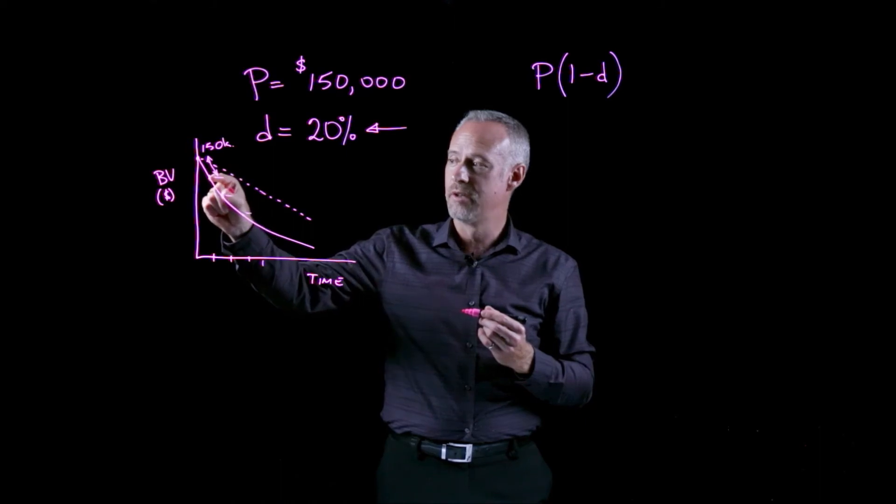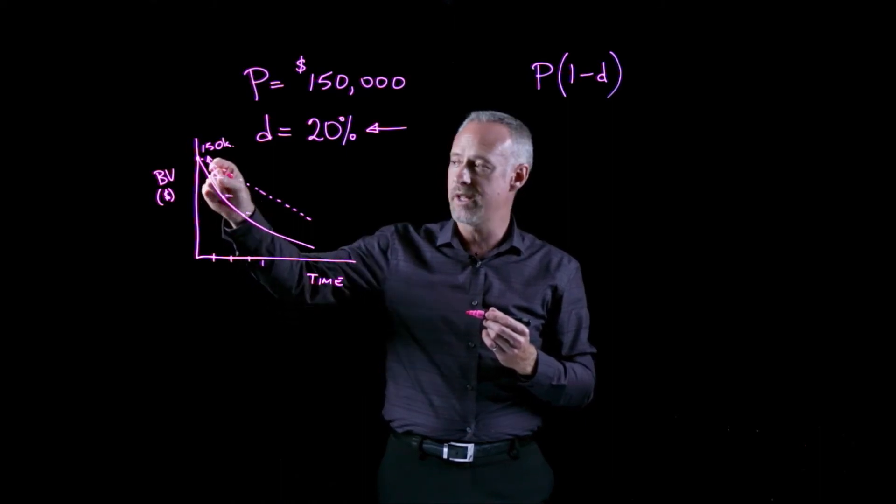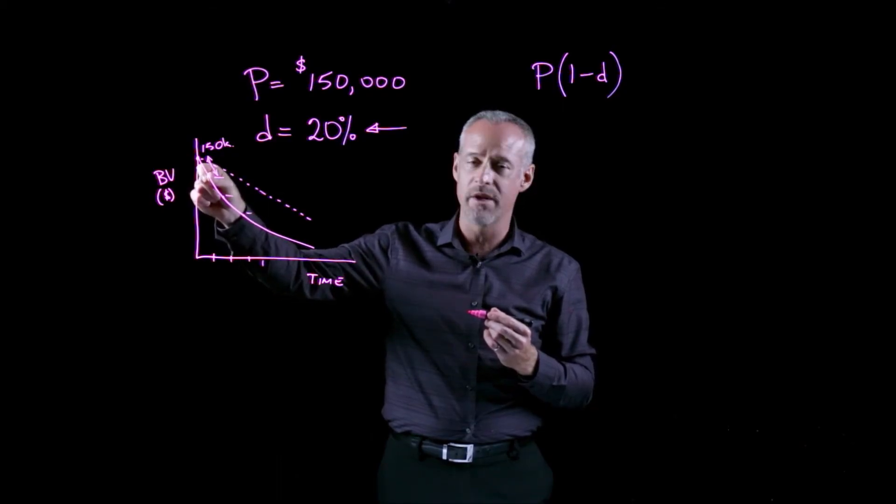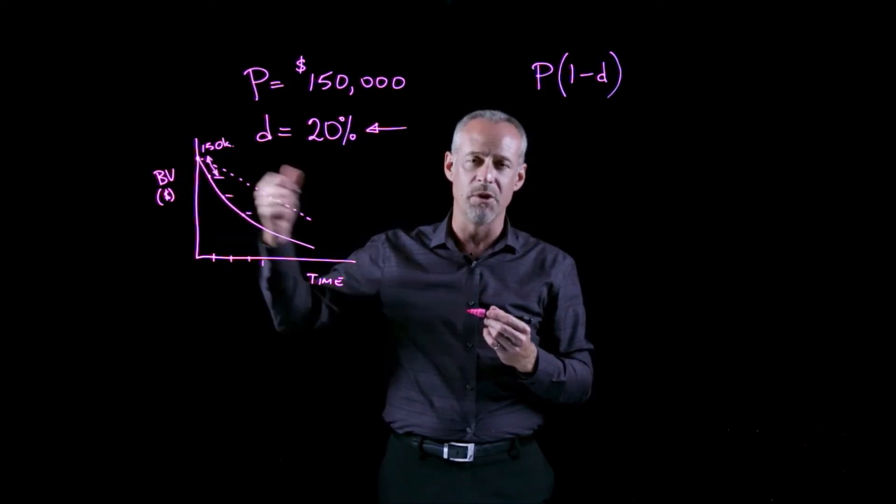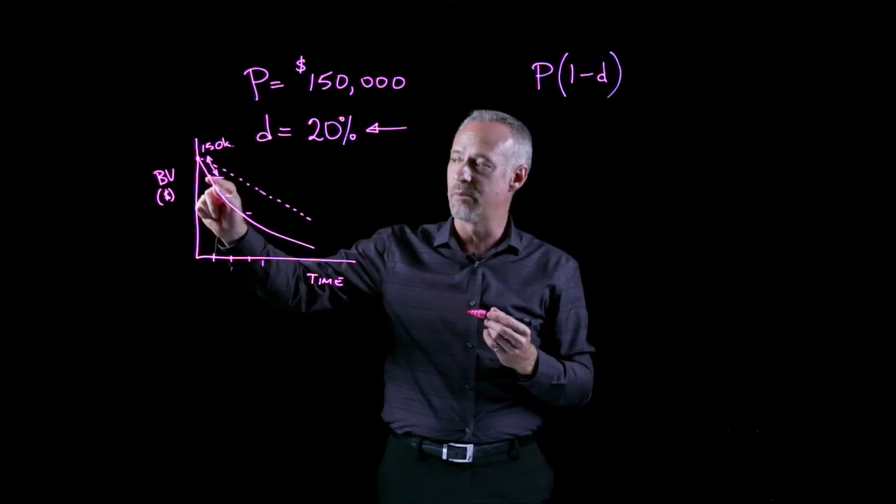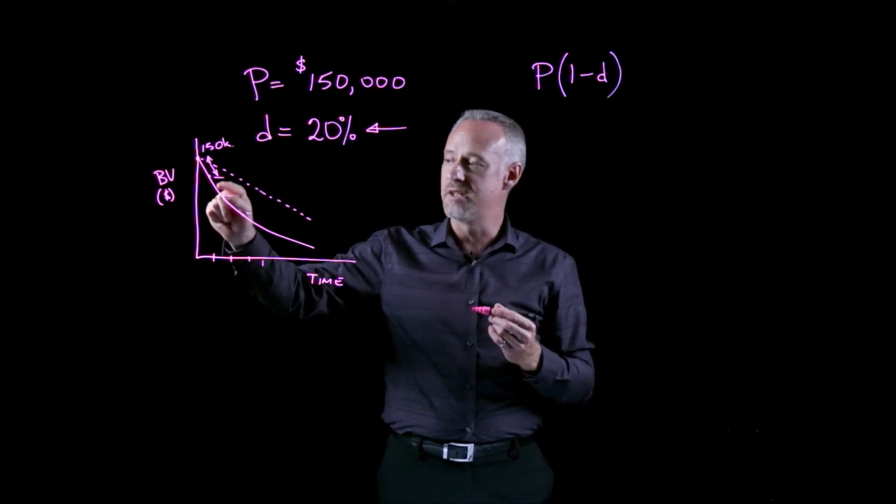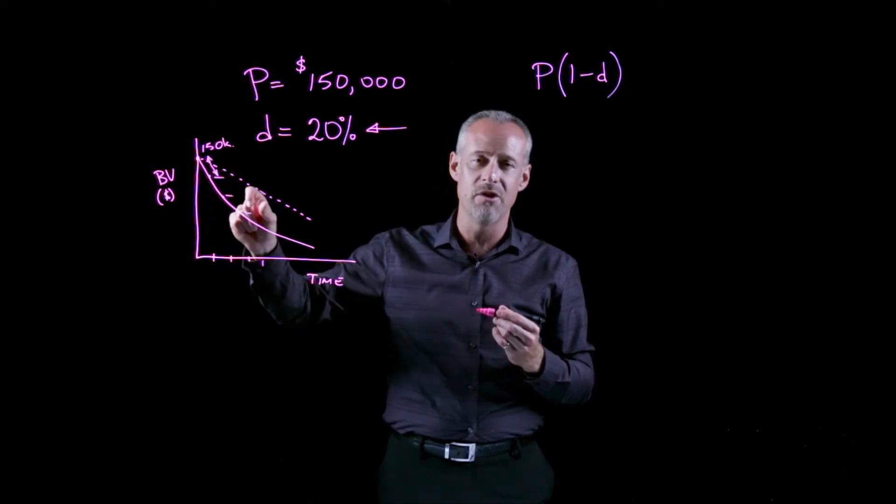If we continue on, you can see quite clearly that the next depreciation calculation will now have a starting value that is the ending value of the book value at the end of the previous year. And again, we would simply multiply by 0.8, this number by 0.8 to get this number. If we do that in successive years,